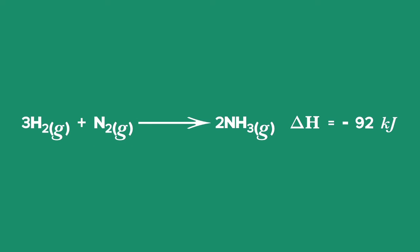This means that when 2 moles of ammonia are made from 3 moles of hydrogen and 1 mole of nitrogen, 92 kJ of energy is released. This could also be stated as delta H is equal to negative 46 kJ per mole of ammonia.